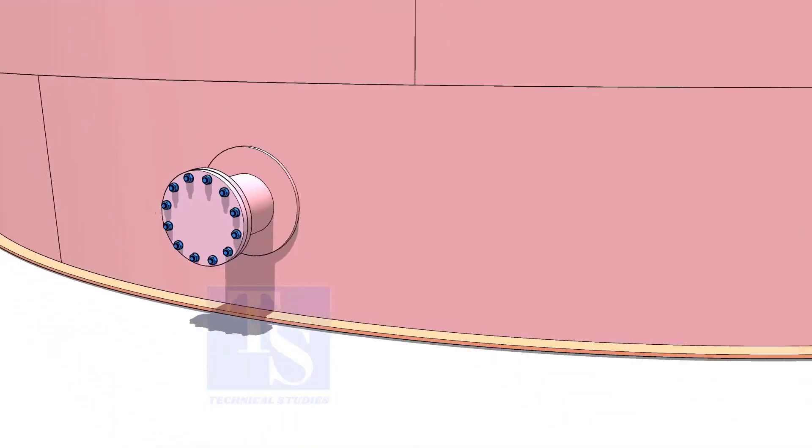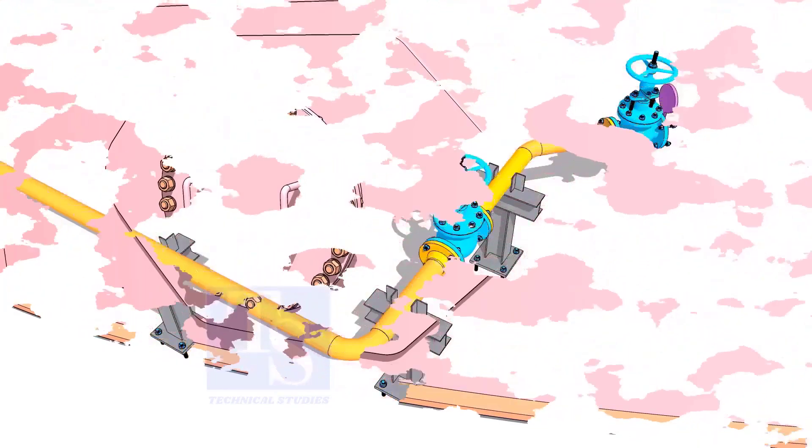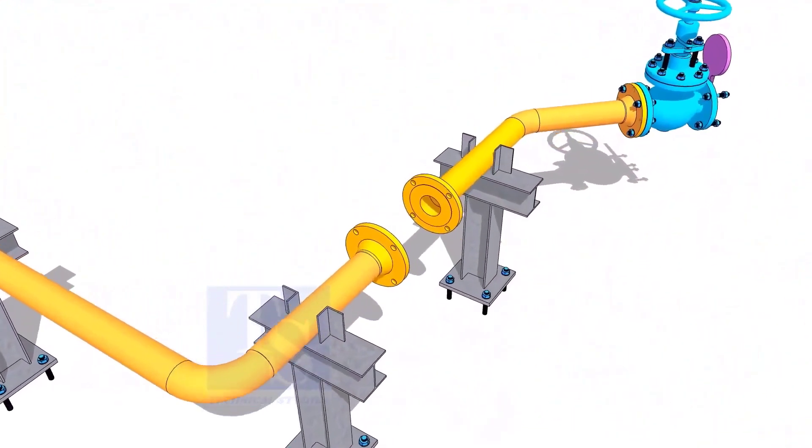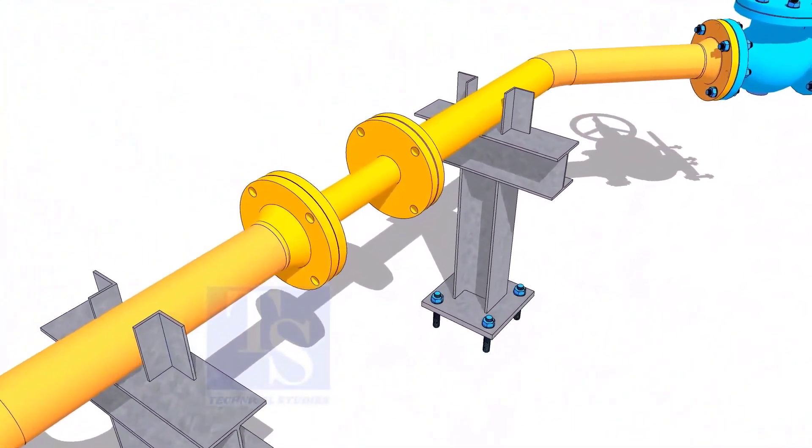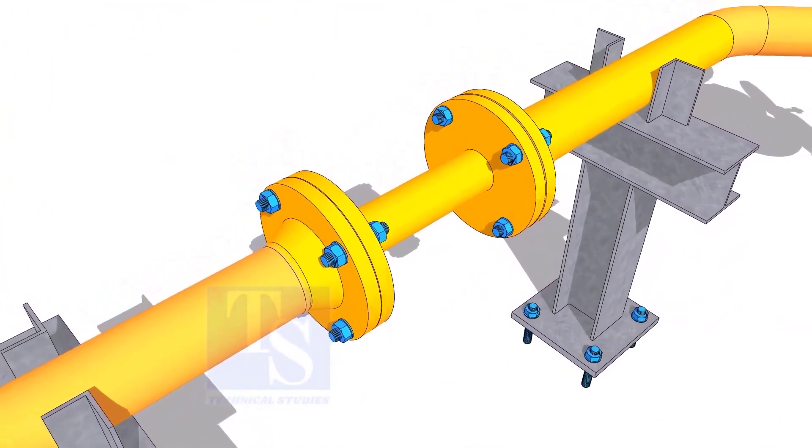Plate flanges are used for low-pressure services or to blind the nozzles of vessels, tanks, etc. for hydrotest purposes. Other use of plate flanges is making temporary spools to replace valves and equipment on a piping system.